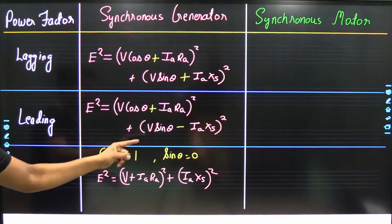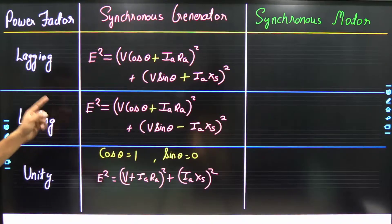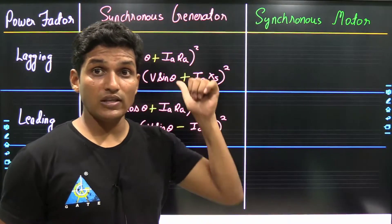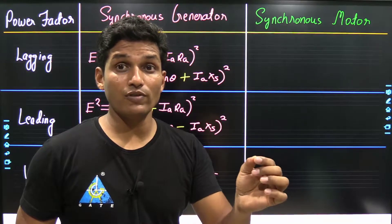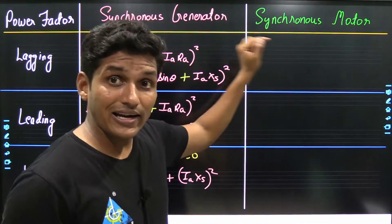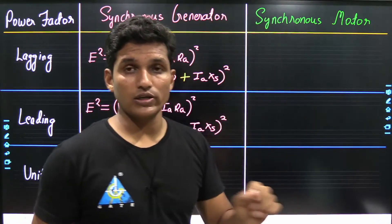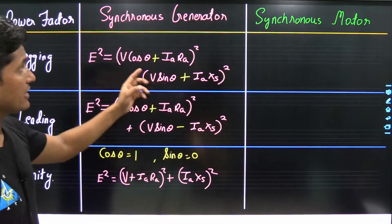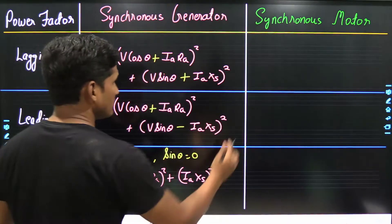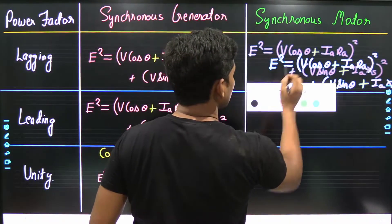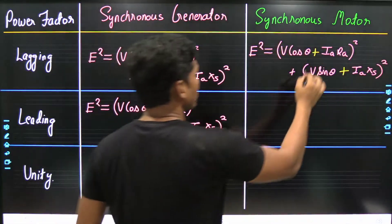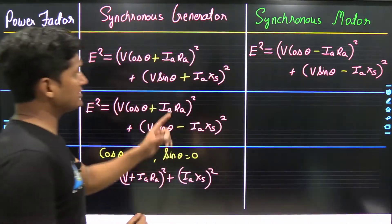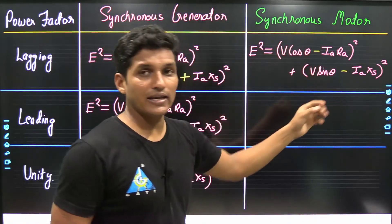Using the generator formula, we can also find the induced EMF at lagging power factor in a synchronous motor. For the motor, all signs are changed — that is, from plus to minus. So at lagging power factor, the formula for induced EMF in a synchronous motor has both signs changed to minus.